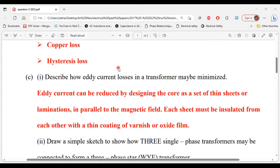Now the sheets should be insulated from each other as well, and this can be done with varnish or oxide film. All right, so that's it for part one of C.